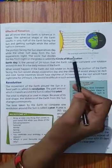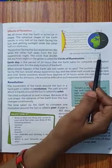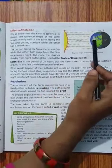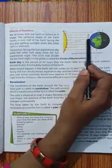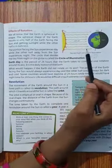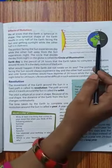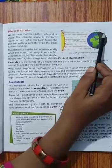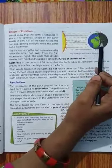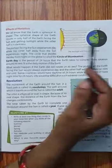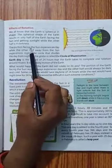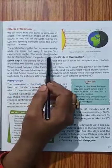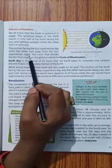Deekhye, in this diagram, day and night and the circle of illumination. This is the sun and this is the earth. These are the light rays. Jehaan peh light rays pard raha hai, vohan peh kya hai? Day hai. Or joh iska back side hai, jehaan peh light rays nahin pard raha hai, vohan peh kya hai? Night hai. The portion facing the sun experiences day while the other half away from the sun experiences night.